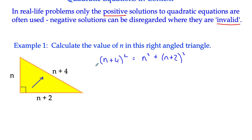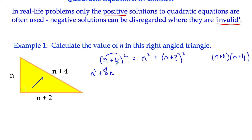If we multiply these out, depending on your technique, you might want to write n plus 4 squared as n plus 4 multiplied by n plus 4. Or if you know the quick way of squaring terms: square the first term to get n squared, multiply them together and double it — so n times 4 is 4n, doubled gives plus 8n — and square the last term to get plus 16. Same with n plus 2 squared: square the first term, multiply together and double it, then square the second term to get plus 4.